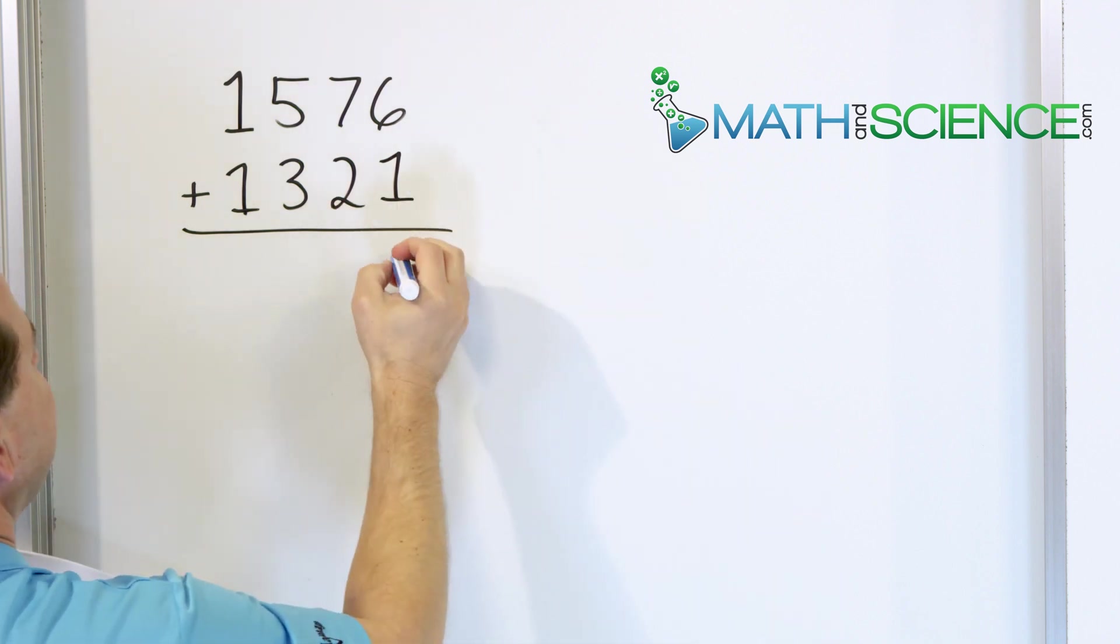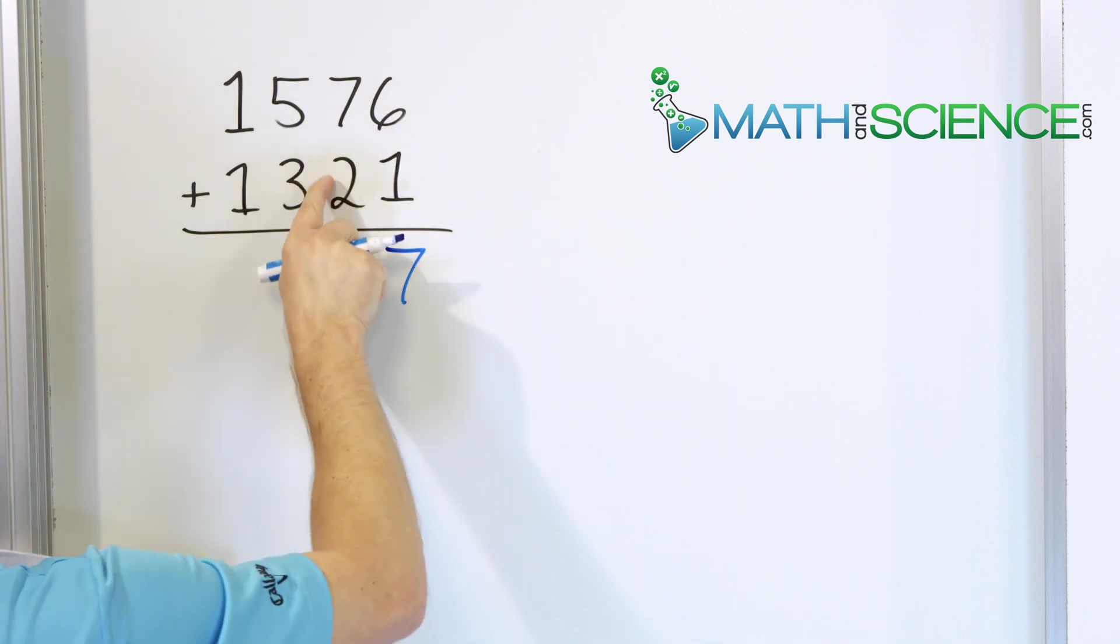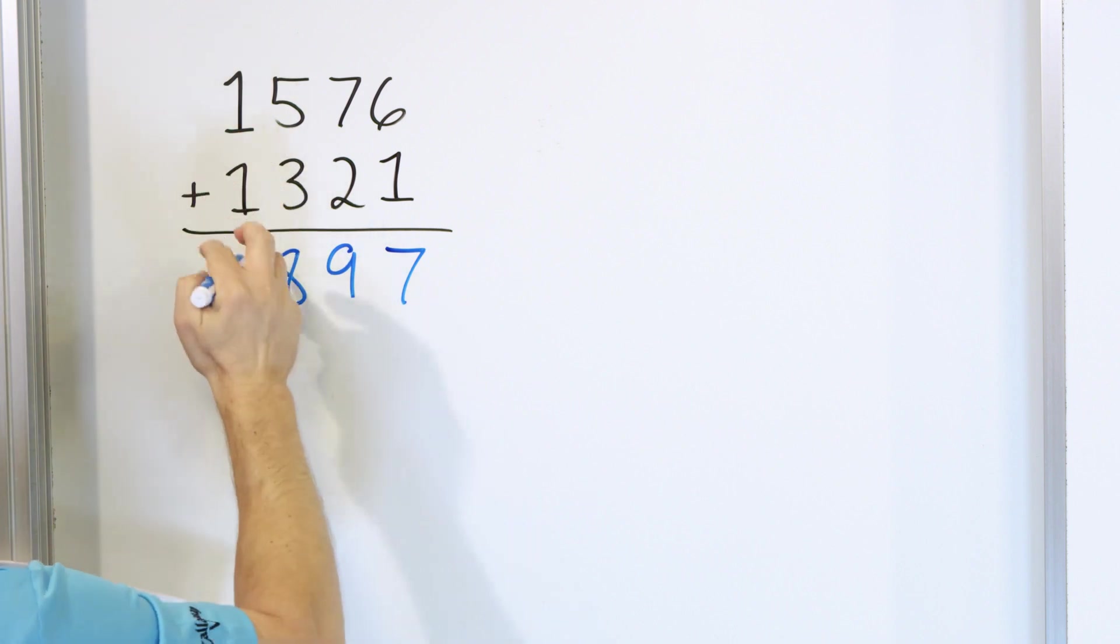6 plus 1 is 7, so that goes right in this column. 7, let's go up. 8, 9 goes in this column. 5, let's go up. 6, 7, 8, that goes in this column. And 1 plus 1 is 2. So no regrouping in that problem. It's straight addition. The answer is 2,897.